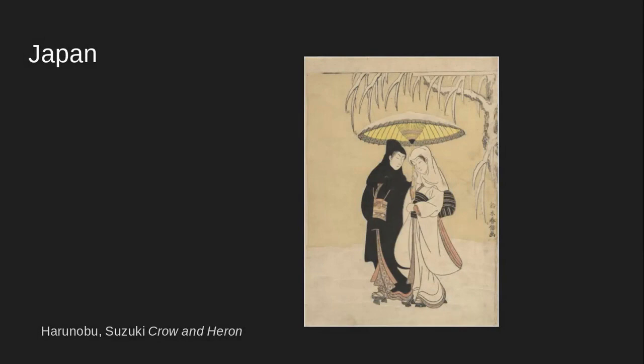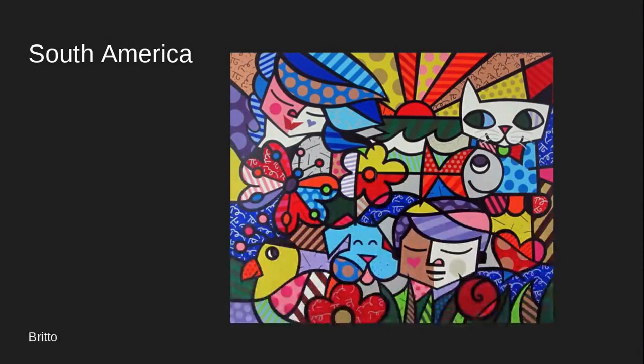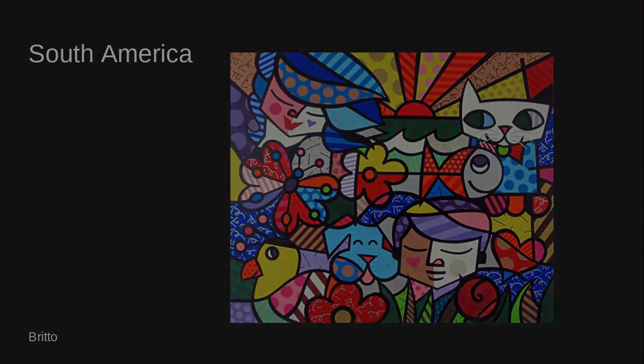People everywhere in the world make art. In Japan, this is an example of an artwork that I have in my classroom. It's called Crow and Heron — it's two people walking, and they have all their special Japanese clothes and their umbrella as well. I love their shoes. Here's another example from South America, a totally different place in the world. This artist likes to use big, bright, bold colors and shapes. All artists from all over the world are making art in different ways.